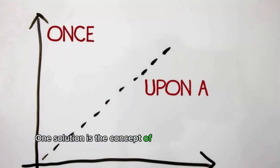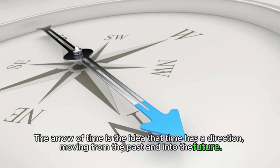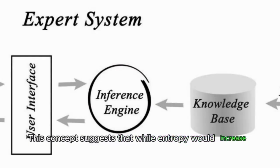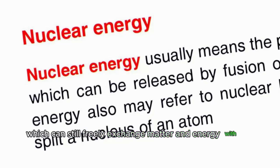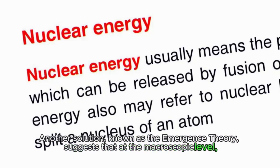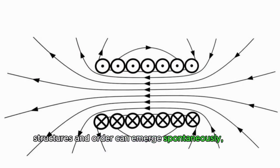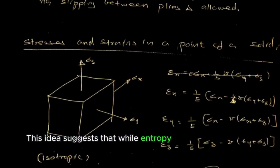One solution is the concept of entropy as an arrow of time. The arrow of time is the idea that time has a direction moving from the past and into the future. This concept suggests that while entropy would increase in a closed system, it doesn't necessarily happen in an open system like the universe, which can still freely exchange matter and energy with the environment, making the second law of thermodynamics inapplicable. Another solution known as the emergence theory suggests that at the macroscopic level, structures and order can emerge spontaneously even though entropy increases at the microscopic level. This idea suggests that while entropy increases on a small scale, it can lead to order on a larger scale.